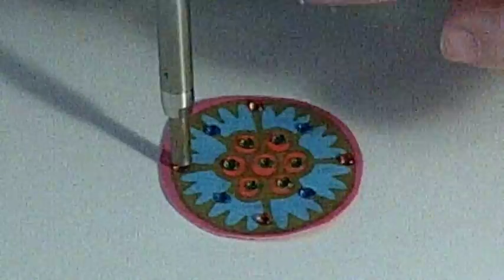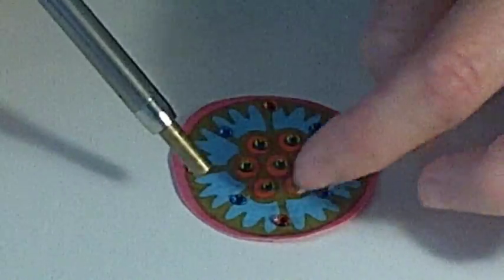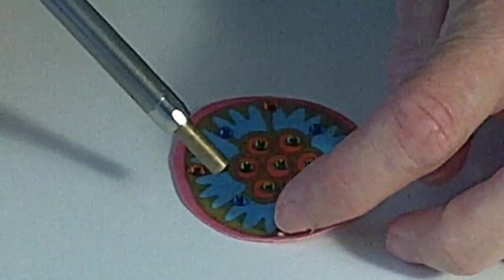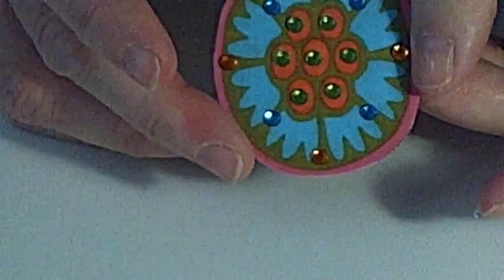Be careful with this tool if you have little ones around. It's very hot. Make sure that when you attach your top crystal that you leave enough room for a little hole so that we can put our bead on. So when you're done it looks like this.